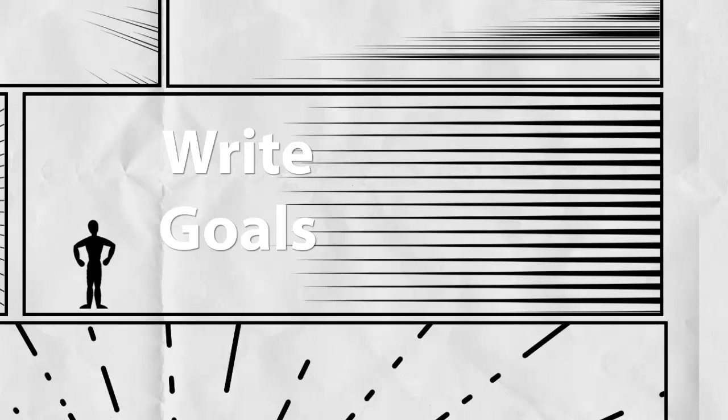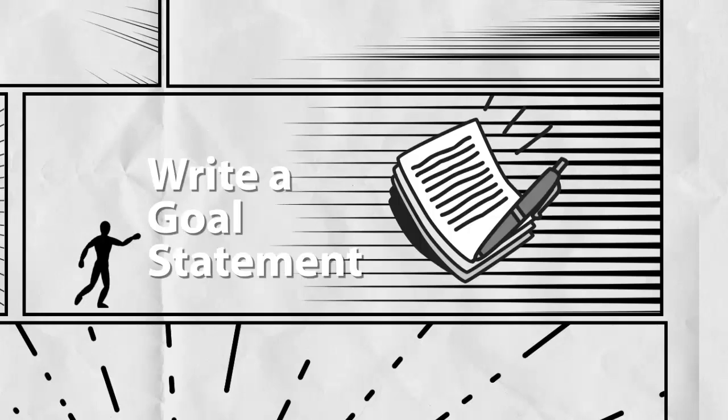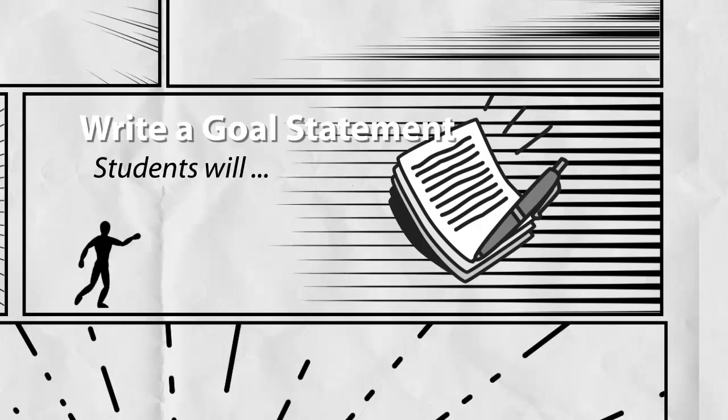If you've made it through getting those questions answered, and now you're feeling like your process can move forward, you're going to want to write a goal statement. How do we go about writing this statement? Start by creating a list of behaviors that the learners will need to perform in order to demonstrate that the goal has been achieved. Then write a clear statement of the goal.